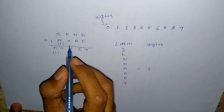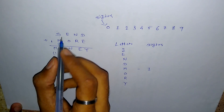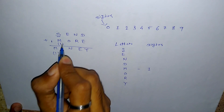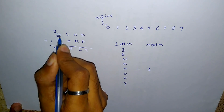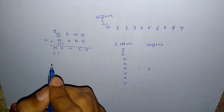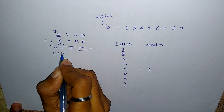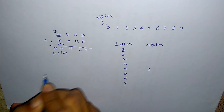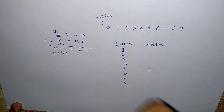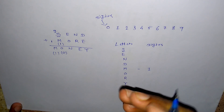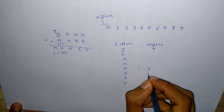When we are getting a carry over here, if we put the value of S as 9, then we get a carry. So 9 plus 1 is equal to 10 — that gives 0 for O and carry 1. So value of S is 9 and we assign value of O as 0.